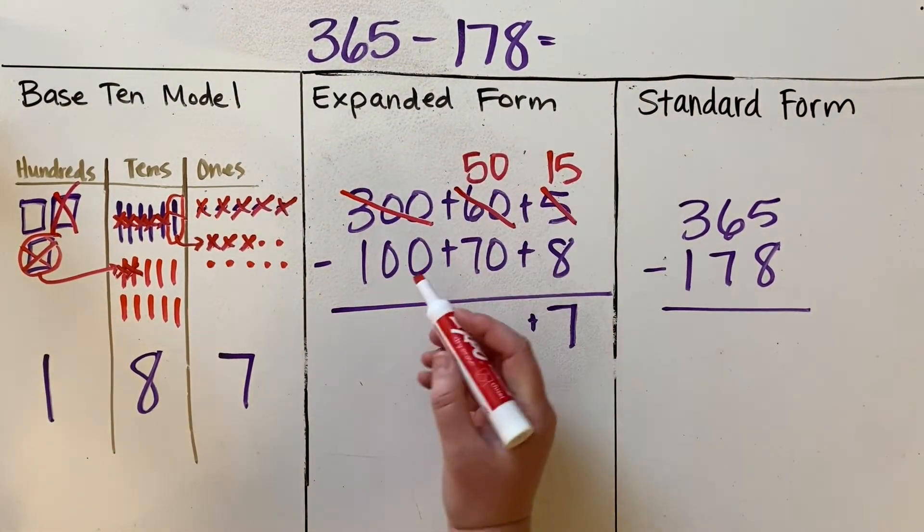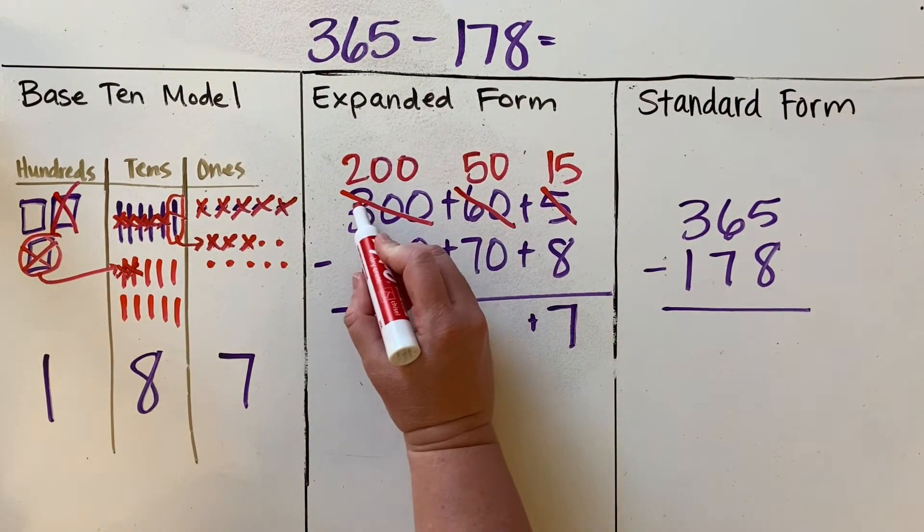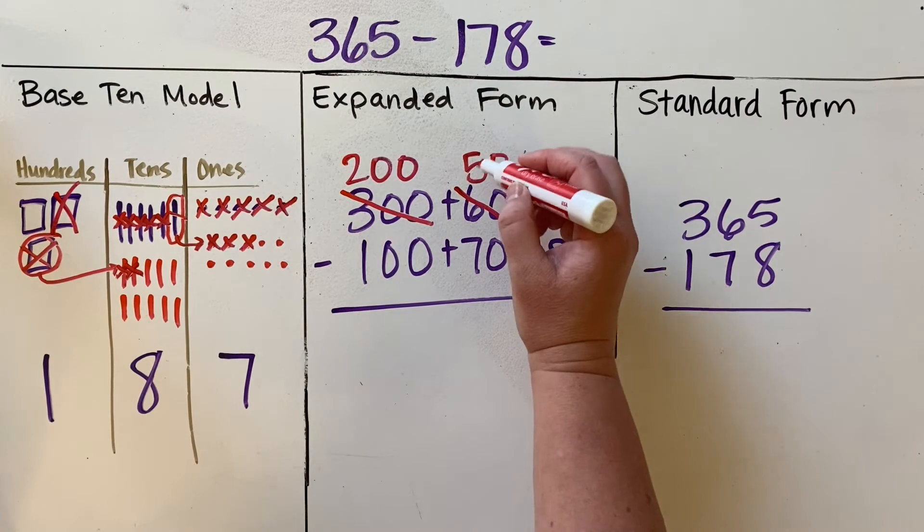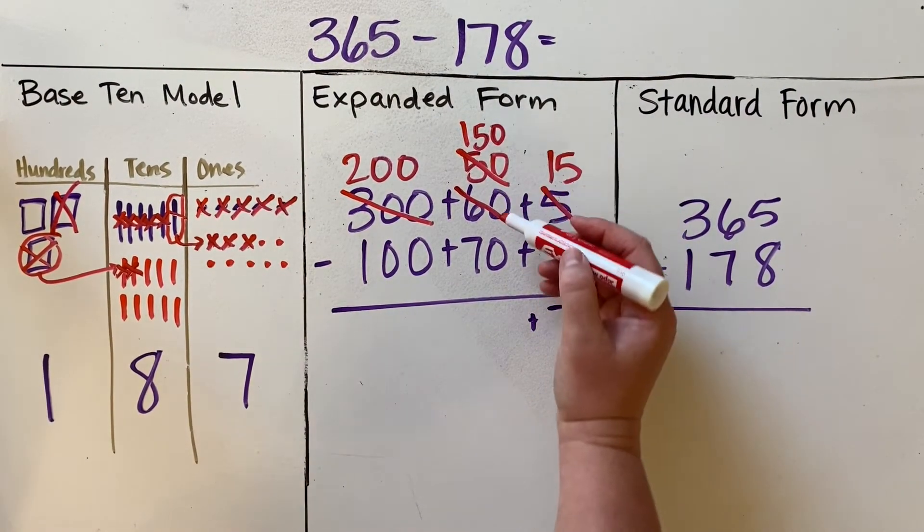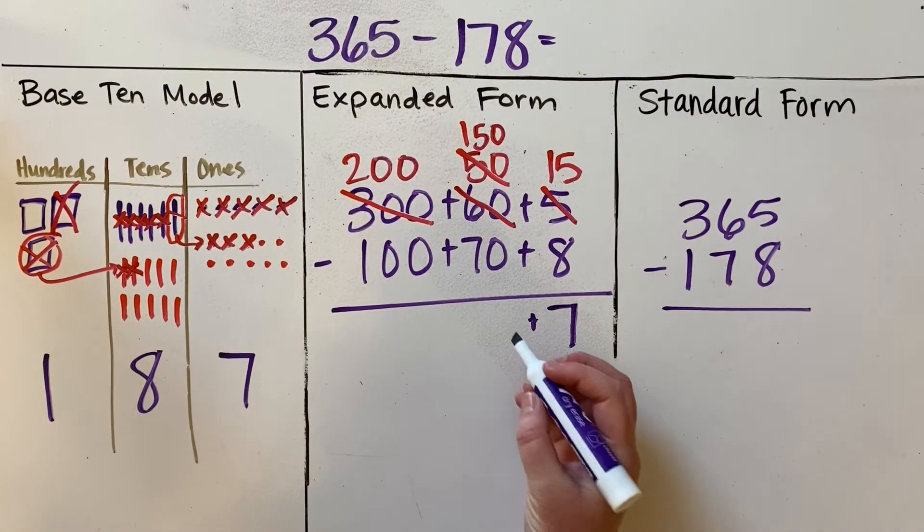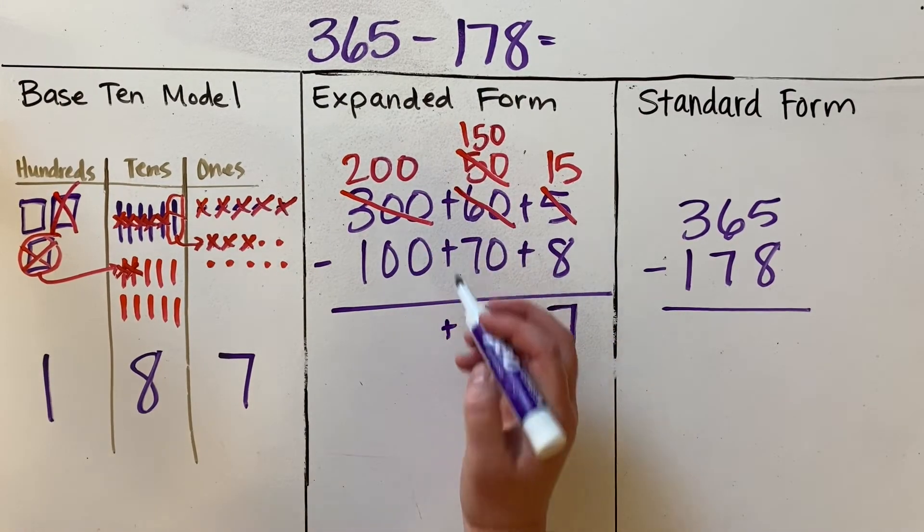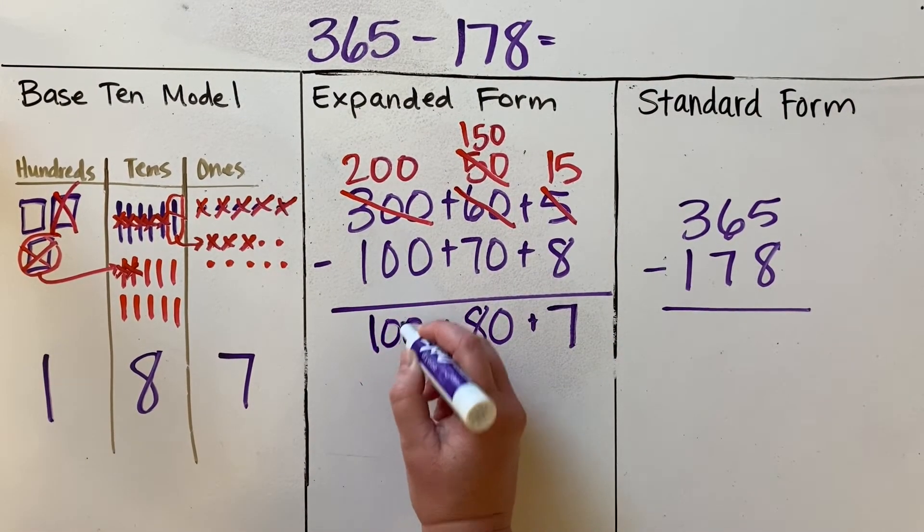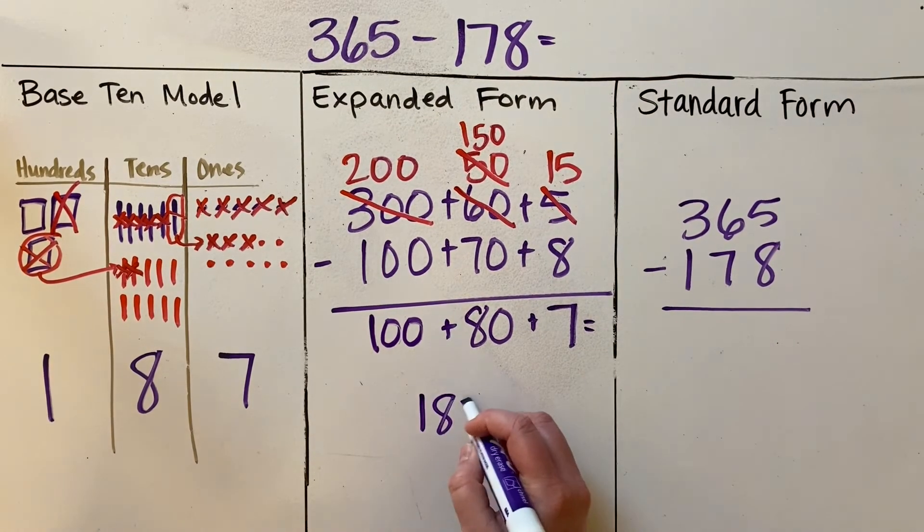So then I decompose something or borrow, regroup from the next place value. Instead of 300, it's 200, and I regroup it into the tens place. So instead of 50, I now have 150. So 150 minus 70 is 80. Then 200 minus 100 is 100. That's 100 plus 80 plus 7 equals 187.